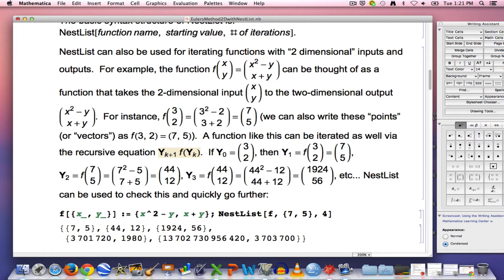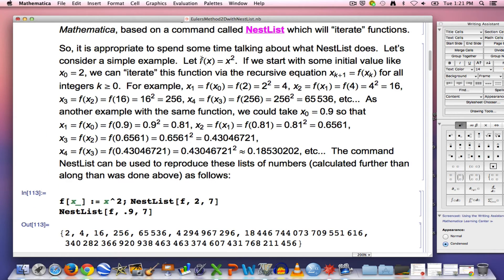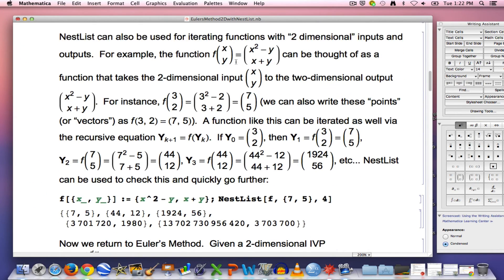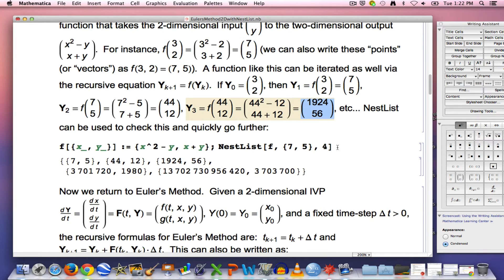You can think of this in vector form. Let me get rid of this double equals there. In vector form like this, that is more reminiscent of a single variable equation like we have up here. But y is a vector here, and we can again start with an initial condition. In this case, the vector 3, 2 gets 7, 5 for the next one, then 44, 12 for the next one, 19, 24, 56 for the next one.